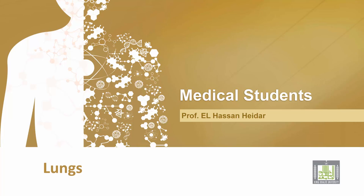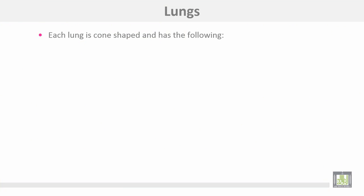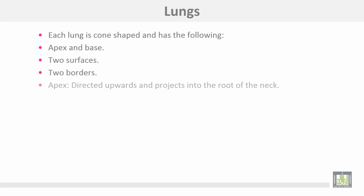Anatomy of the lungs. We have two lungs. Each lung is cone-shaped and has the following: an apex and base, two surfaces, and two borders.